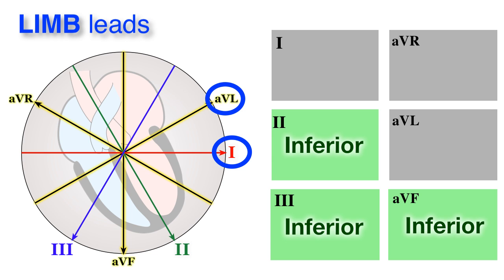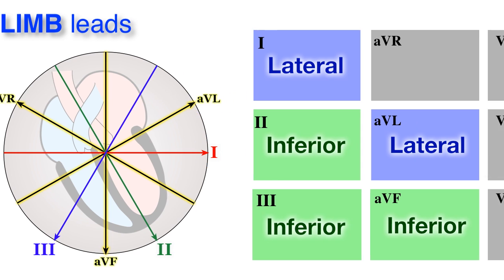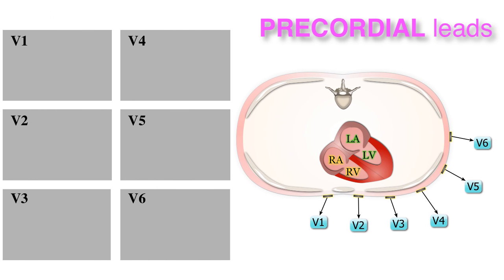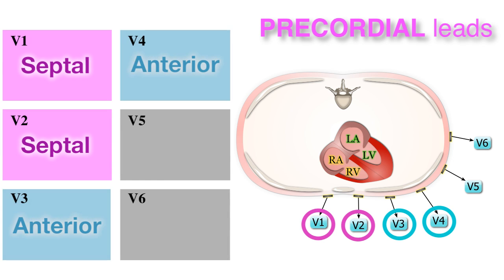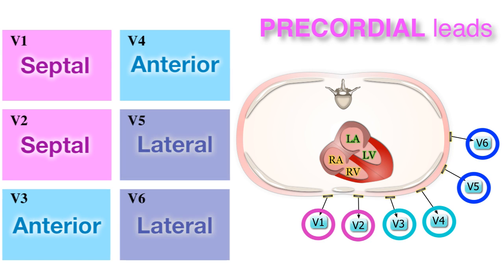These are called the lateral leads. Looking now at the precordial leads, which record on their horizontal axis, leads V1 and V2 are deemed septal leads, leads V3 and V4 are anterior leads, and leads V5 and V6 are also considered lateral leads along with 1 and AVL.